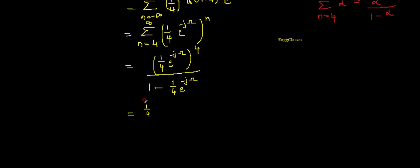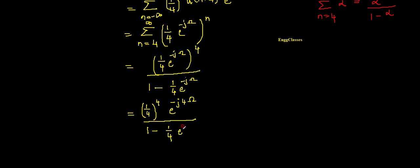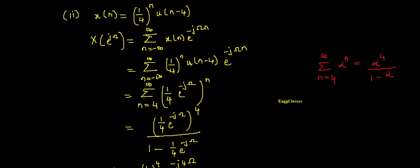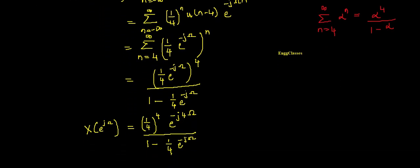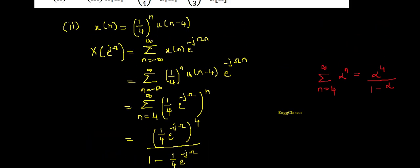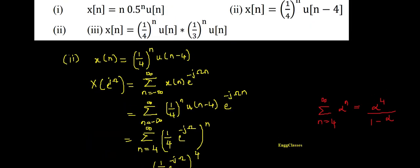I can write the final answer as: (1/4)^4 * e^{-j4ω} divided by (1 - (1/4) * e^{-jω}). That is X(e^{jω}). This is one of the easiest numericals using the concept of DTFT. That's it for this video lecture. We'll consider the next numerical in the next video. Thank you so much for watching.